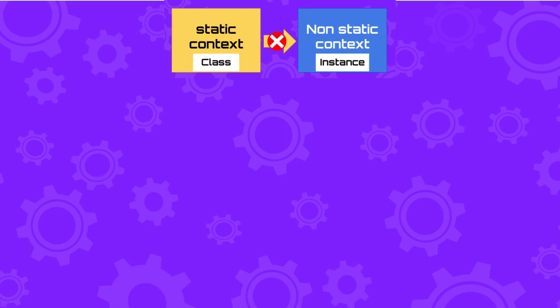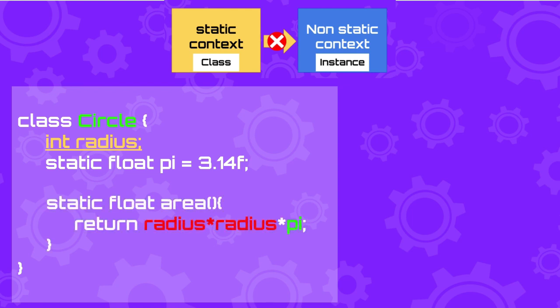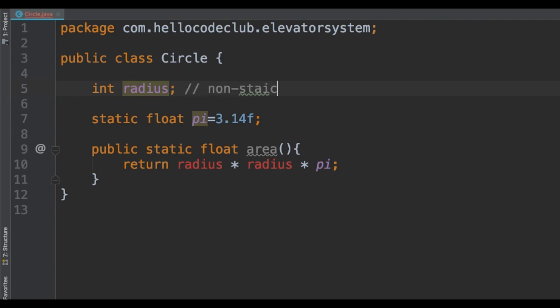So if we go back to the Circle example, if we create a static method called 'area', then we can call the 'pi' field because it's part of the static context, but we cannot use the 'radius' field because that is non-static. Non-static fields belong to the object. To access a non-static field you will need to create an instance of the class. Let's see how the code will look: we will have a class named Circle with two fields — 'radius' is a non-static field and 'pi' is a static field.